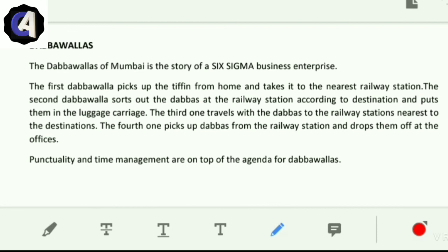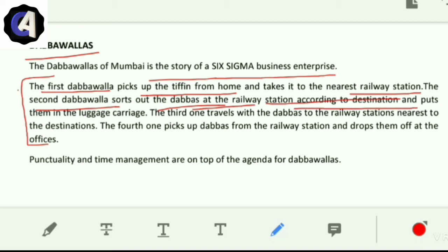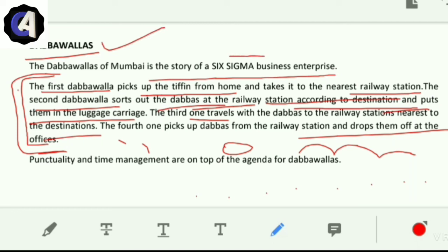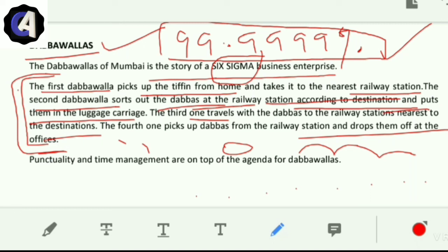The Dabbawalas case study shows they have achieved Six Sigma. The story is: the first dabbawala picks up tiffins from home and takes them to the nearest railway station. The second dabbawala sorts out the dabbas at the railway station according to destination and puts them in luggage carriage. The third one travels with the dabbas to the railway stations nearest to their destinations. The fourth one picks up dabbas from the railway station and drops them at offices. They have made a complete organization, a full supply chain, and their management is very good. That's how they achieved Six Sigma, meaning six times nine - their efficiency is 99.9999 percent. In one million they make one mistake. Punctuality and time management are on top of the agenda for dabbawalas. So thank you very much, I hope this will serve you a bit in your examinations. All the best.